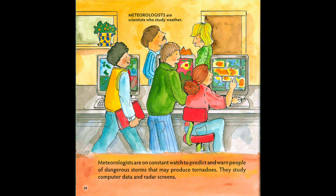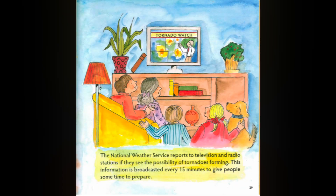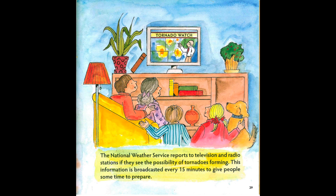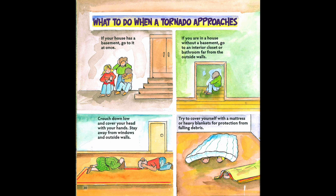Meteorologists are on constant watch to predict and warn people of dangerous storms that may produce tornadoes. They study computer data and radar screens. Meteorologists are scientists who study weather. The National Weather Service reports to television and radio stations if they see the possibility of tornadoes forming. This information is broadcasted every 15 minutes to give people some time to prepare.